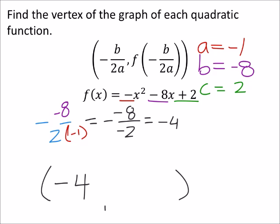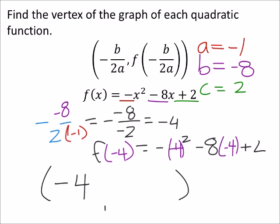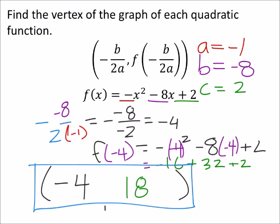And to find the corresponding y value, we're just going to replace that x value in the function. So I'm looking at f of negative 4. So this should equal negative x squared minus 8 times x plus 2. But once again, we're replacing all the x's with the negative 4 that we found. Alright, so this ends up being a negative 16. And we're going to make that a plus 32 plus 2. So that ends up being 18. I did that a little quick. Is that all right? I hope.